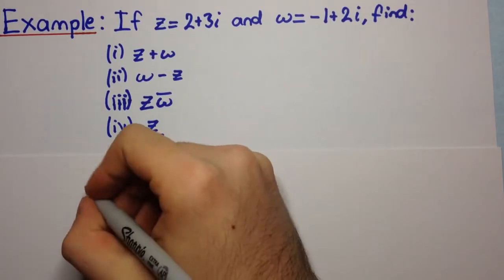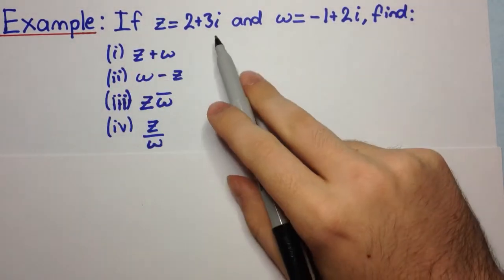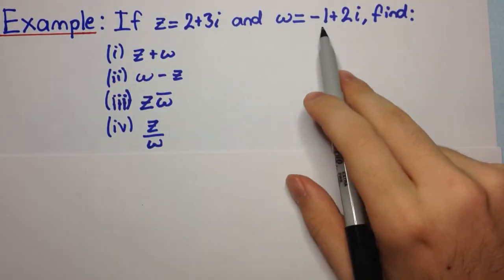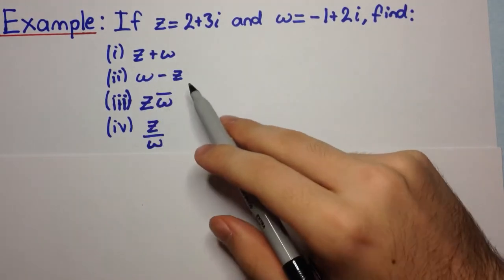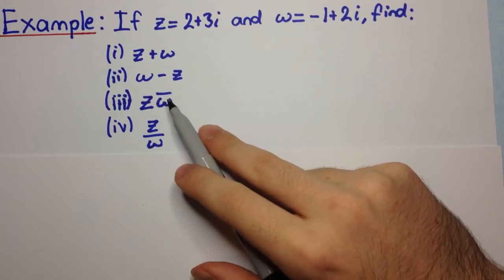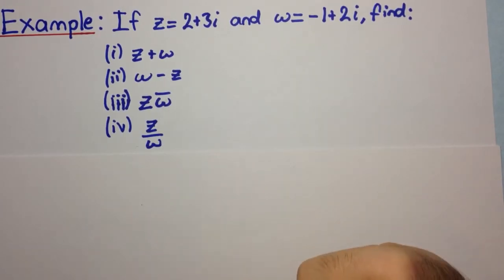The question says: if z equals 2 plus 3i and omega is minus 1 plus 2i, find z plus omega, omega minus z, z times omega bar, and z divided by omega.